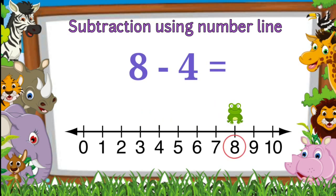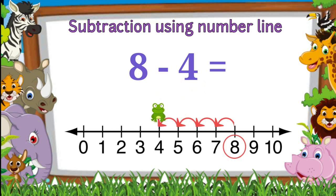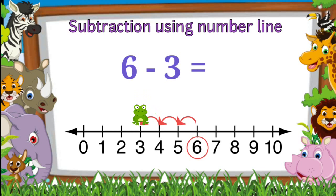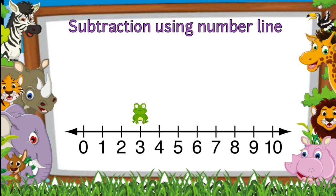The frog lands on number four, so eight minus four is equal to four. Six minus three — the frog starts at number six and then moves three places to the left. The frog lands on number three, so six minus three is equal to three.